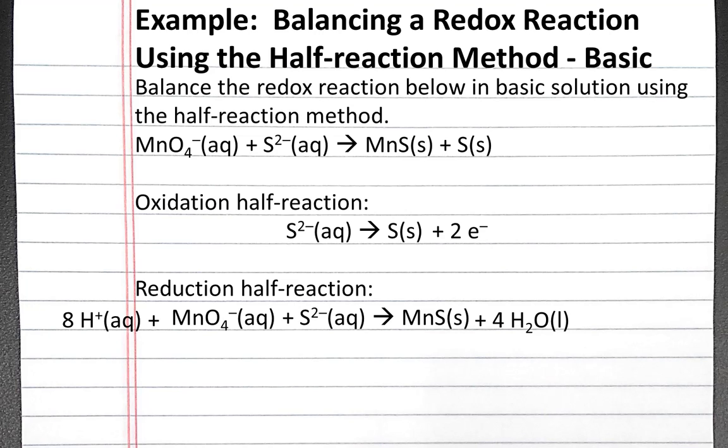Since we're in basic solution, we want to get rid of our H pluses and have OH minuses. We can do this by adding the same number of hydroxide ions to both sides as there are H+ ions. So we'll add 8 OH- ions to both sides. The 8 H+ and 8 OH- ions on the left will add together to produce 8 water. Now we have 8 water on the left and 4 water on the right, so we can eliminate 4 waters from both sides. And on the left, we have 4 waters left over.